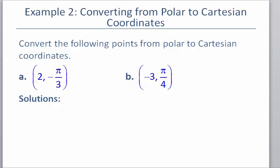Let's look at a couple of quick examples. We want to convert the following points from polar to Cartesian, to rectangular. We're going to use the formulas X equals R cosine theta and Y equals R sine theta. We have our R value, which is 2, and our angle theta. All we have to do is plug into these formulas. For our X, we're going to say X is equal to R, so for us 2 cosine theta, and plug in our values.